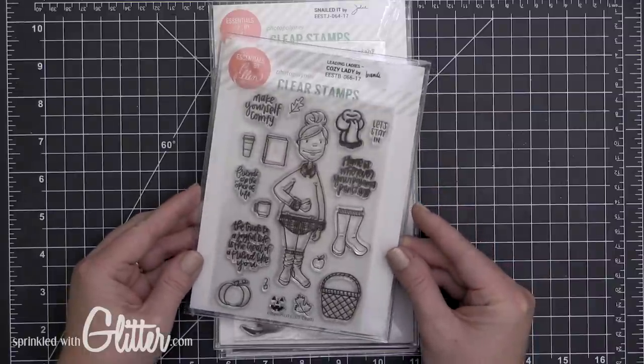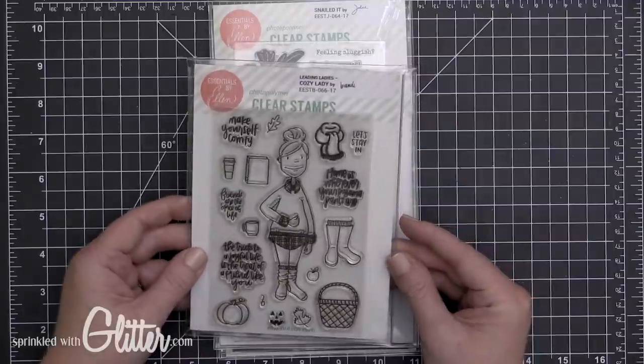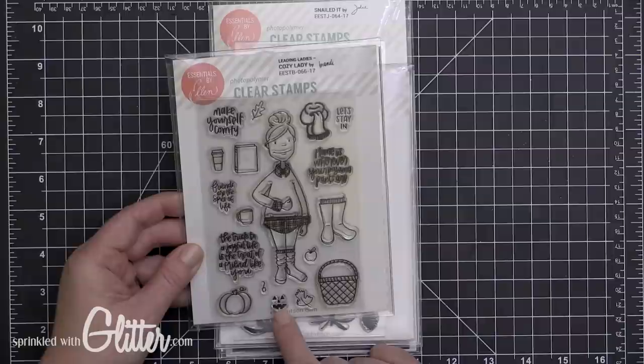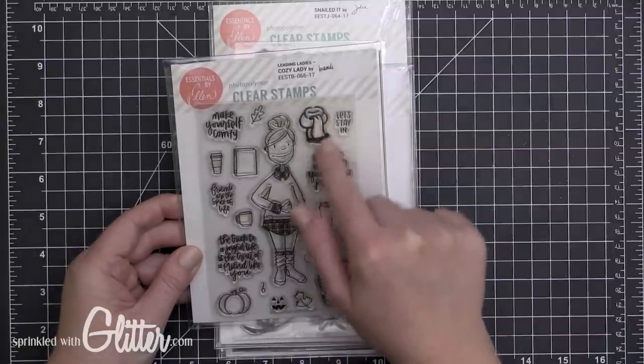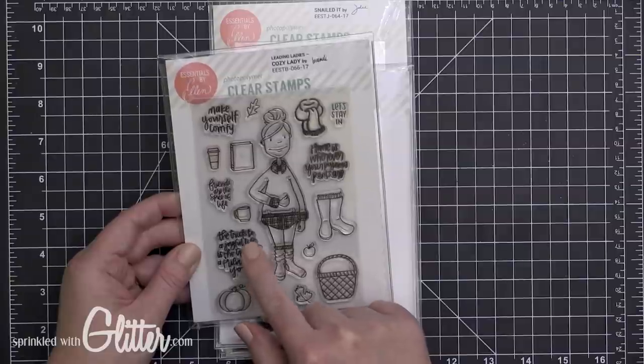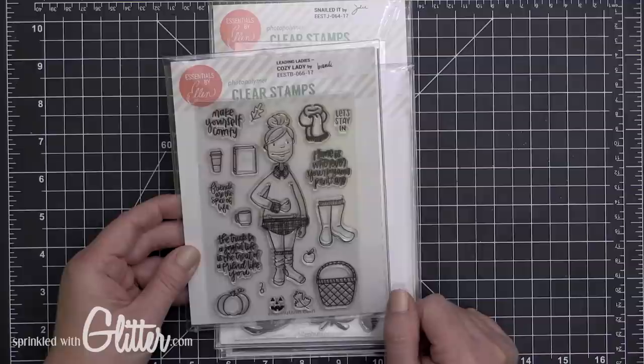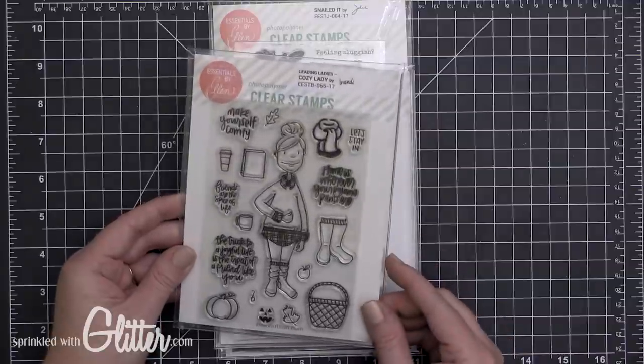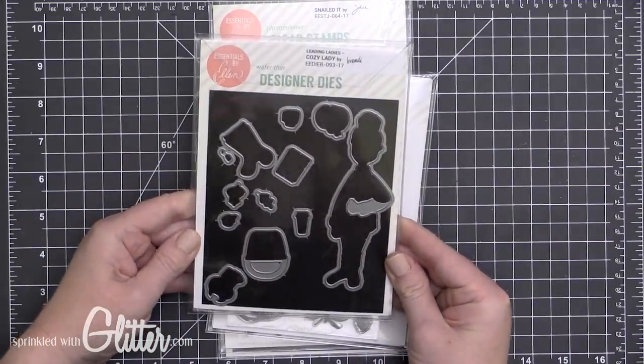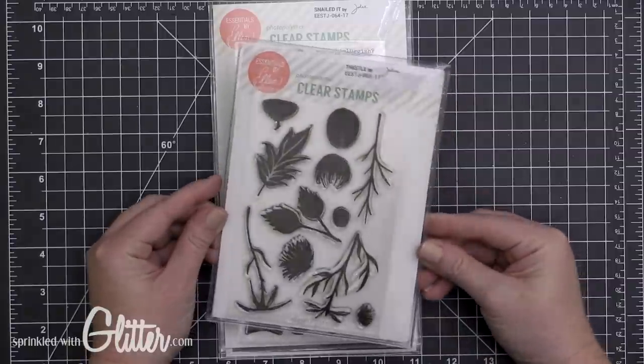This first stamp set here is the Leading Lady. This is a series of stamps and this is the Cozy Lady. She has her little galoshes, her basket, a pumpkin, and I love this scarf up here. She has some fun sentiments with her as well which I'll be using on a couple of my cards today. I love the one that says 'Home is where the pajama pants are' and 'The trick to a joyful life is the treat of a friend like you.'